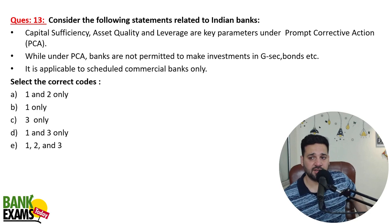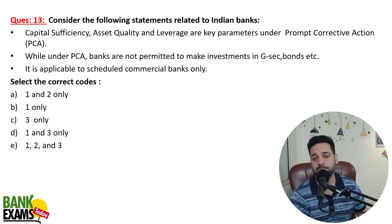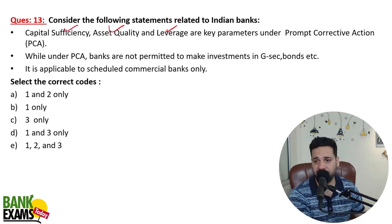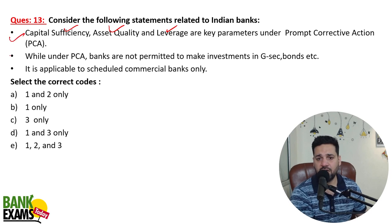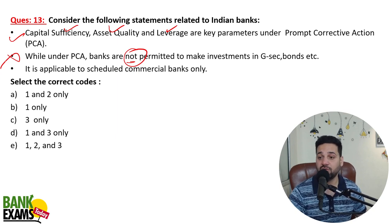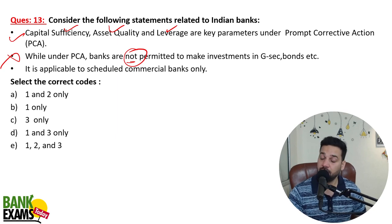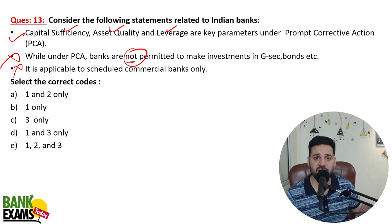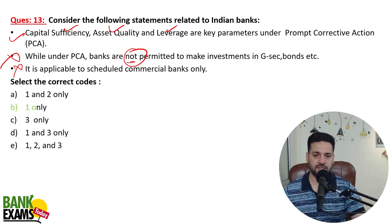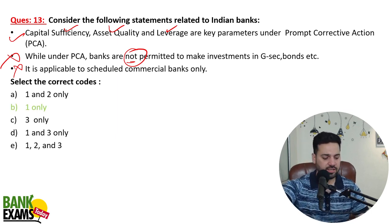Consider the following statements related to Indian banks for PCA. Under PCA, the key parameters are capital sufficiency, asset quality, and leverage — which is actually correct. Under PCA, banks are not permitted — the statement says 'not permitted' but banks are actually permitted to make investments in government securities and bonds, so that statement is false. PCA is applicable to scheduled commercial banks as well as foreign banks working in India. Only the first statement is correct.